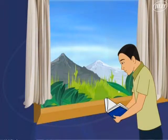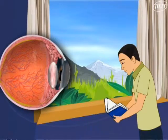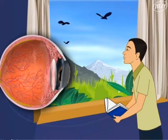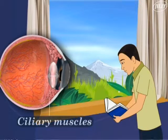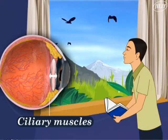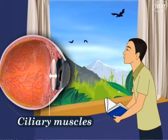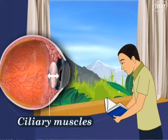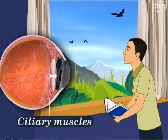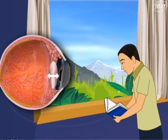We see objects at different distances with the same clarity. What changes take place in our eyes when we look at objects lying at different distances? The thickness of the lens changes with the action of the ciliary muscles. When the eye is focusing on distant objects, the ciliary muscles get relaxed and the lens becomes less convex. It happens the other way around when we see a closer object — the muscles contract to thicken the lens. So the efforts of ciliary muscles to change the thickness of the lens result in focusing near and far objects clearly on the retina.